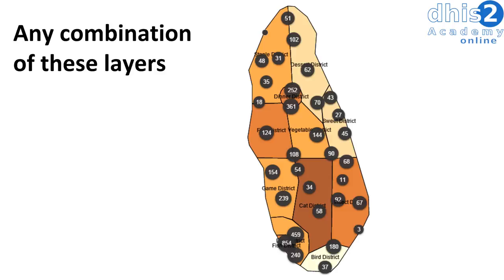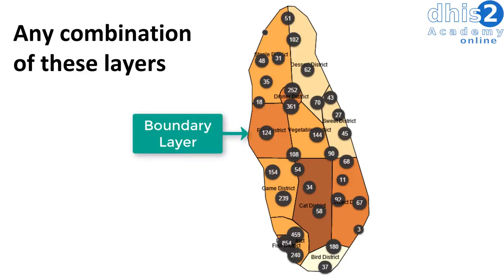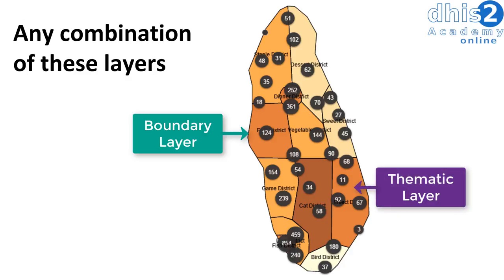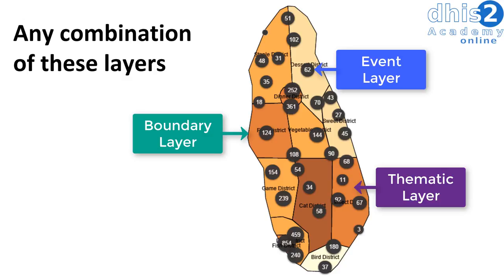We can create combinations of these layers. In this example, I have a boundary layer which shows my administrative boundaries of my districts. I then have the thematic layer, which shows the data of these districts. This is finally combined with the event layer, which is placed on top of both the thematic and the boundary layers. We can then look at all of this data together on the map.